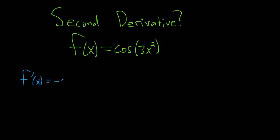This will be negative sine of 3x squared — that's the derivative of the outside evaluated at the inside — and then times the derivative of the inside, so 6x. 2 times 3 is 6, and you subtract 1 from the exponent, so you get 6x.